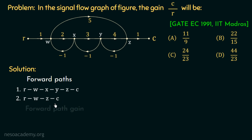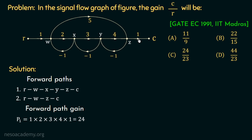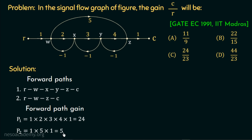We will now move on to the calculation of forward path gain. The forward path gain of the first forward path is the product of five branches: 1 × 2 × 3 × 4 × 1 = 24. For the second forward path, we multiply the gains of three branches: 1 × 5 × 1 = 5.